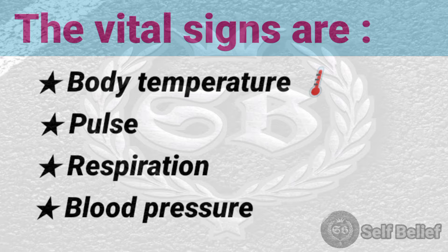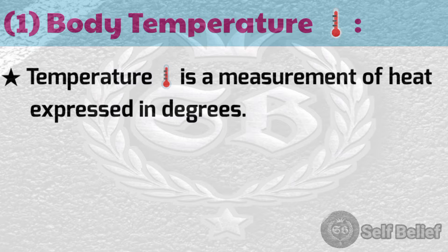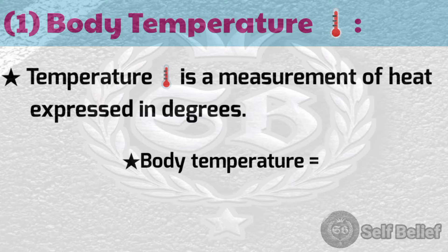The first vital sign is body temperature. Temperature is a measurement of heat expressed in degrees. The body temperature is the difference between the amount of heat produced by the body processes and the amount of heat lost to the external environment. So we can write: body temperature equals heat production minus heat loss.